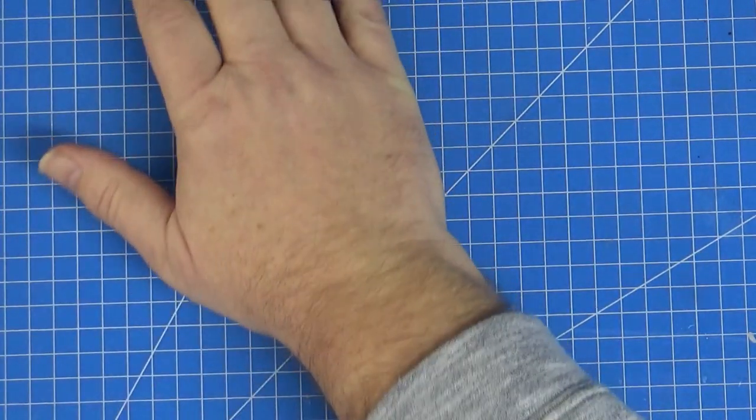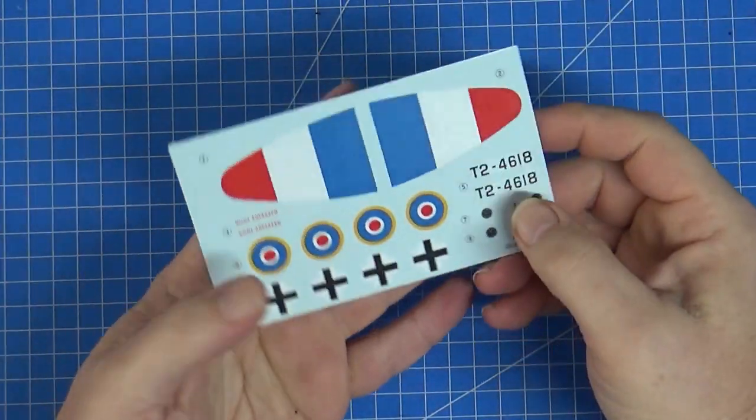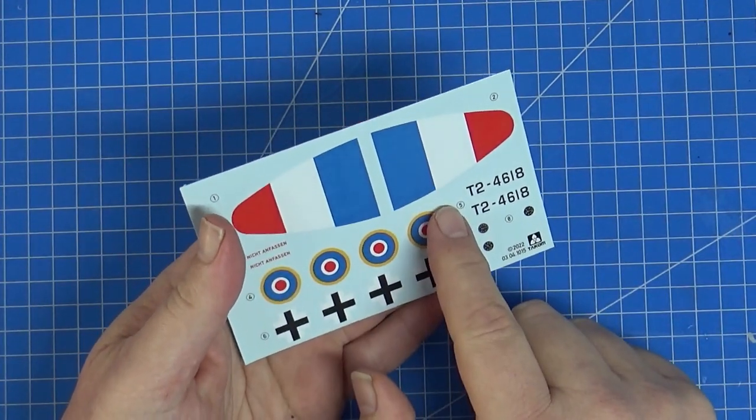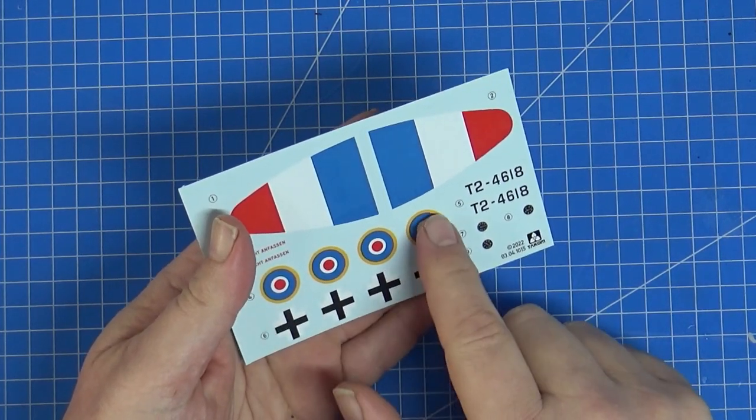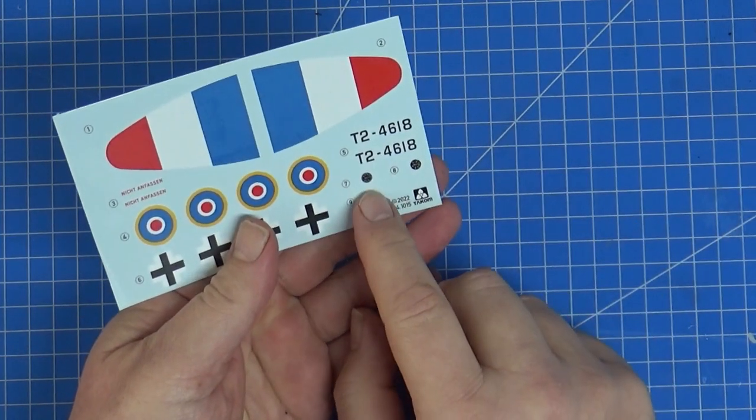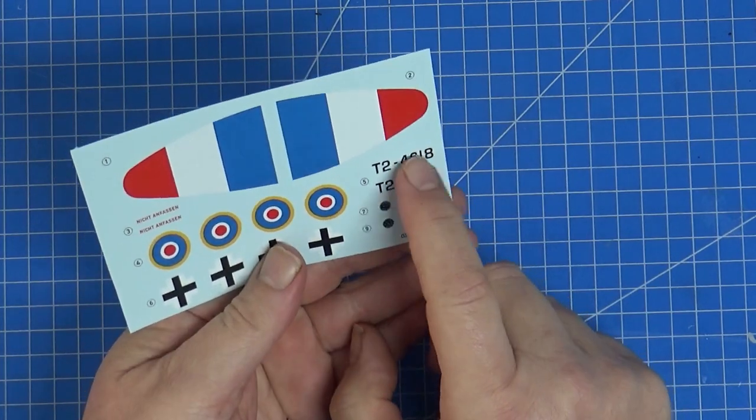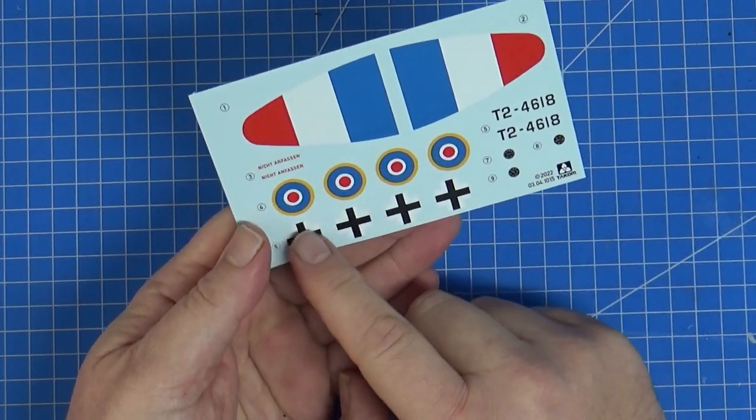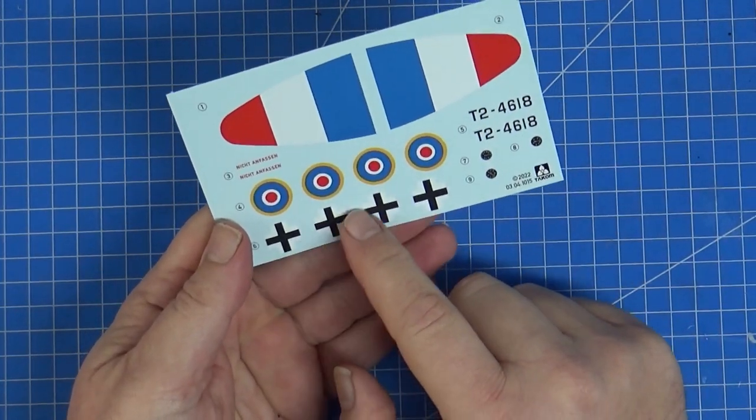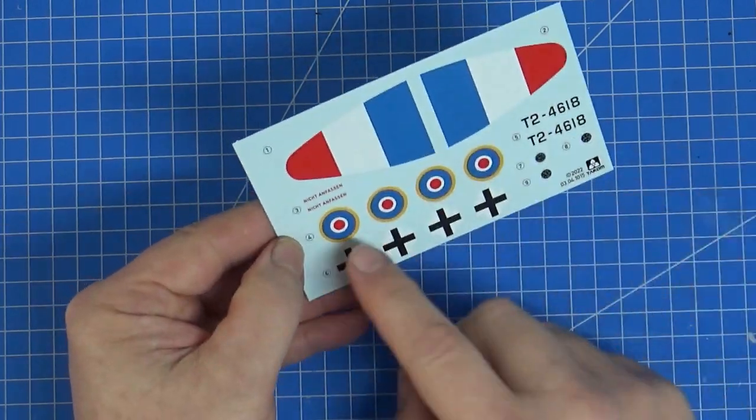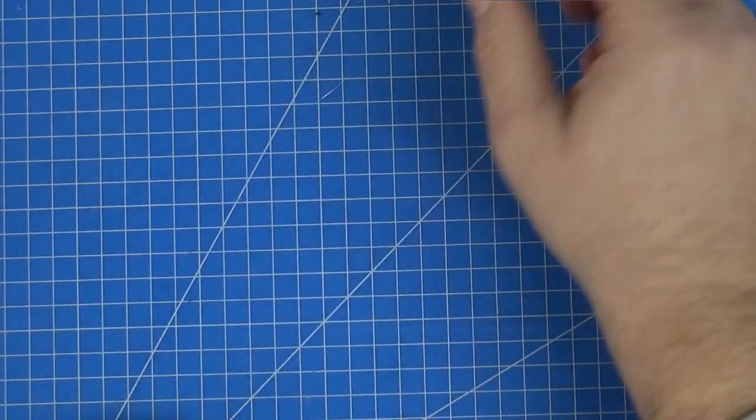So enough of that. Let's have a look at the decals, which I must admit are really disappointing. The blues seem way out of register, particularly on these roundels and they're super thick and I can see some, they seem to be pockmarked with glue or something. These do not look good at all. I think the only benefit of these decals are the instrument dials. The tail code there looks a lot better, although the carrier film is very thick and I'm not too sure about these Balkenkreuz. I think that's the correct way to pronounce those. Yeah, not happy with those. And the red seems to be out as well. This scale, you probably want to mask it.